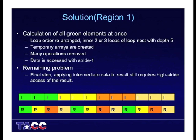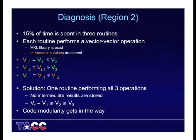The solution we came up with was to calculate all the green elements at once. We rearranged the loop order for the inner two or three loops, created temporary arrays to facilitate that, and removed quite a lot of operations. The most important part was that all data access to these intermediate values — and during the calculation of those intermediate values — was now stride one. There is still a remaining problem: the intermediate values are now calculated in a group, but they are applied to the result, and the result is not stored in stride one.